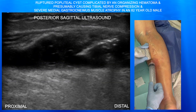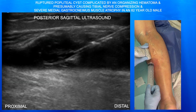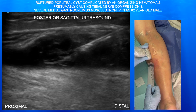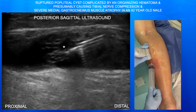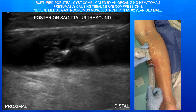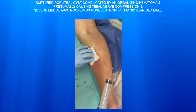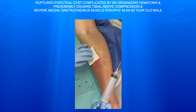Even though I was not very optimistic, here we are going in trying to drain what we could, given the fact that he was having significant symptoms. We were able to get a little bit of fluid out of that dark pocket, but essentially didn't get much at all, as this is essentially an organizing hematoma. So we recommended that he see a surgeon for surgical evacuation of this organizing hematoma mixed in with this ruptured popliteal cyst.